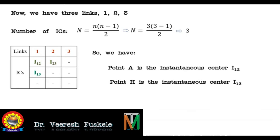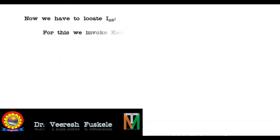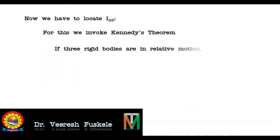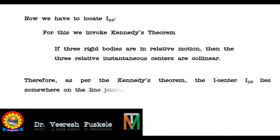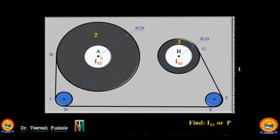We have that point A is instantaneous center i12 and point H is instantaneous center i13. Now we have to locate i23, so we invoke Kennedy's theorem. According to Kennedy's theorem, if three rigid bodies are in relative motion, then the three relative instantaneous centers should lie on the same line — they should all be collinear. Therefore, i23 lies somewhere on the line joining A and H.